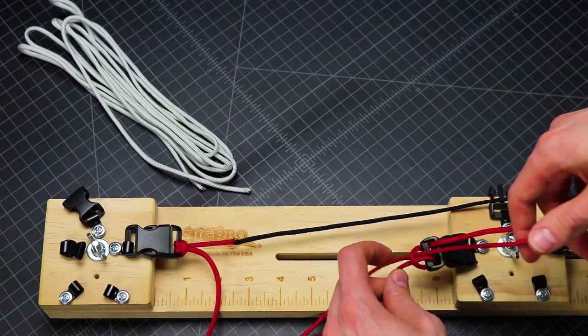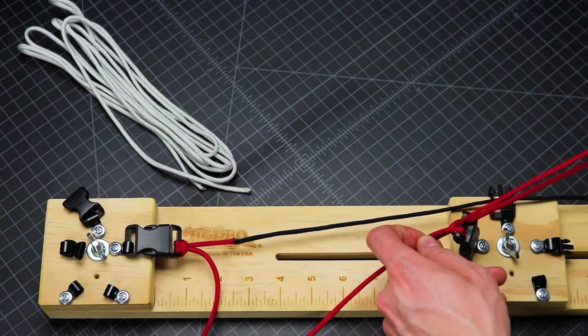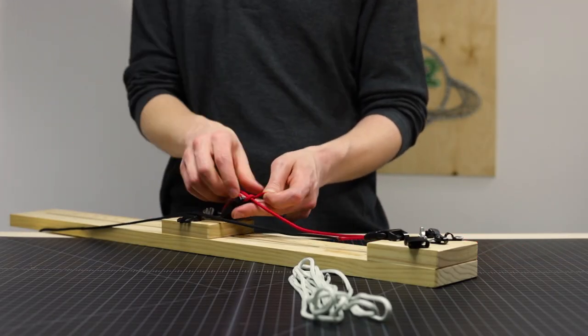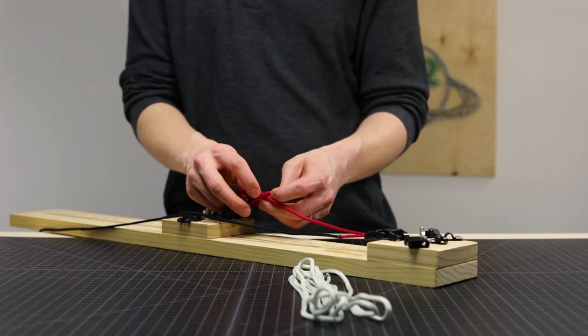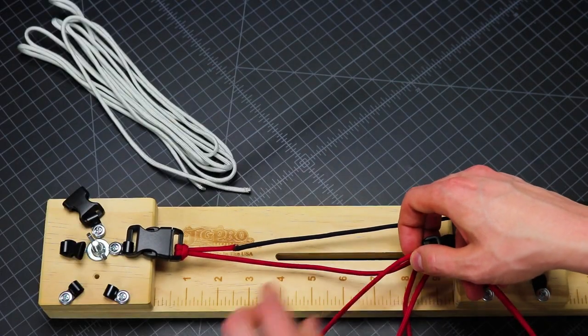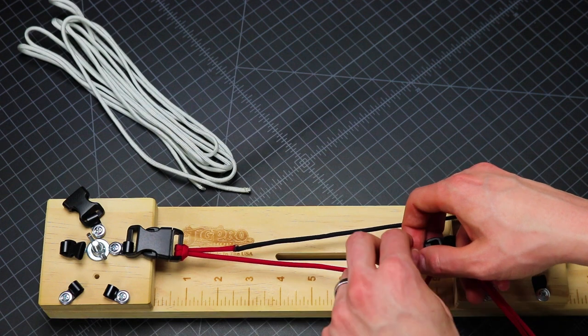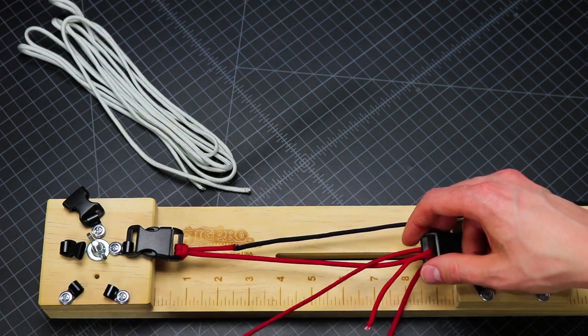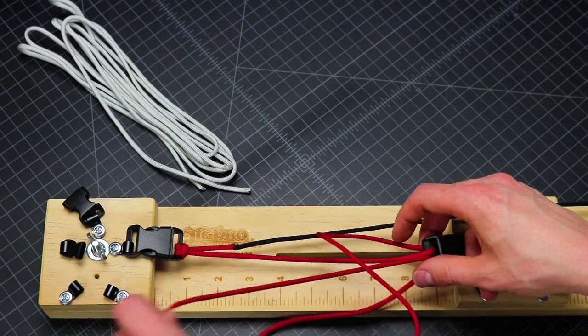And then we just want to pull all the slack through so that our bracelet is tight. I've already set up this jig to be the right size for my wrist, but you'll have to measure your wrist to make sure that you get yours right. A jig isn't absolutely necessary for a trilobite bracelet, but I've found that it's a lot easier. It helps keep your core strands straight so that they don't get twisted up in the weave cords.